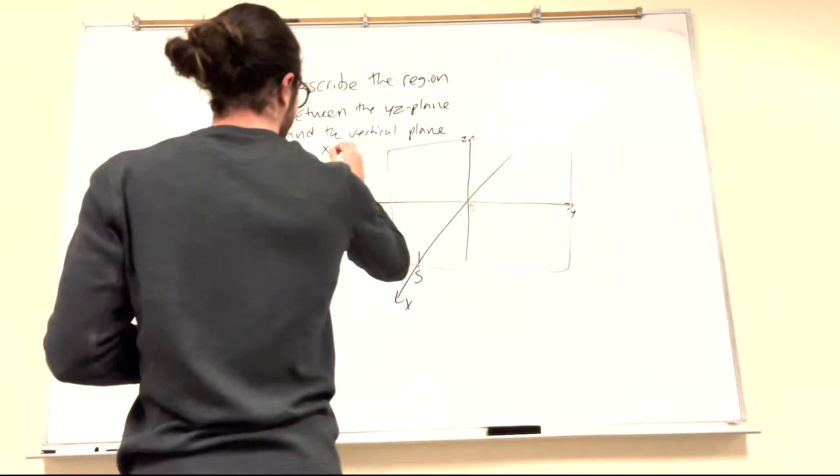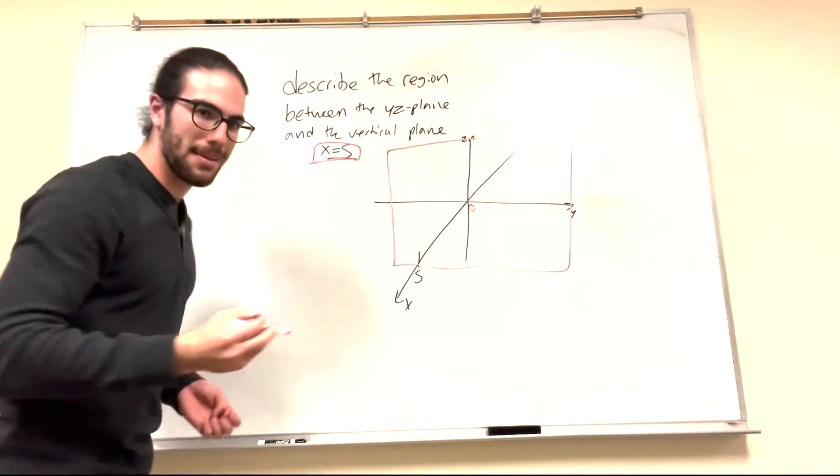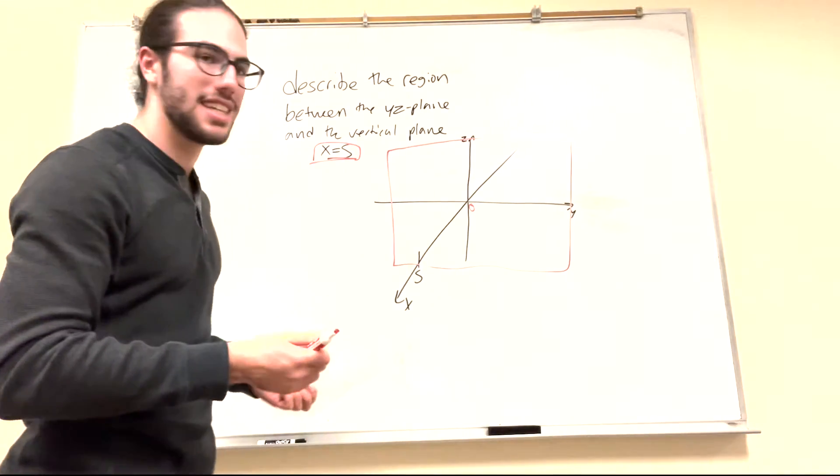And then we also have that x is equal to 5. Well, when you have this equation x equals 5, what does it say about y and z? It doesn't say anything about y and z. That means y and z could be anything.